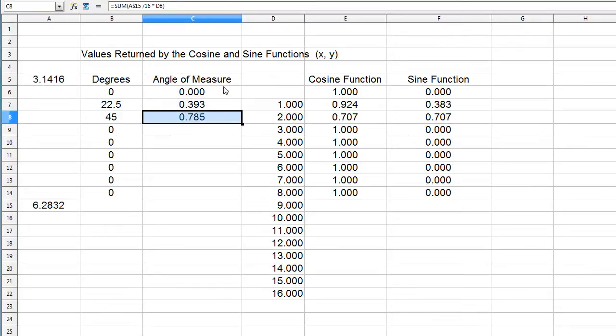And so now it multiplies it times D8. We don't fix this reference because I wanted to multiply it times that each time. And let's just continue copying. Let's see what happens.